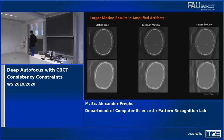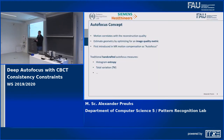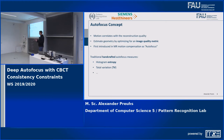The bigger the patient movement — the bigger the misalignment — the bigger the artifacts are. This idea can be used to compensate for motion, and is commonly known as the autofocus concept, where we devise an image quality metric: a single number summarizing how well our image looks. We then optimize that number to find a geometry that performs well on the image quality metric.